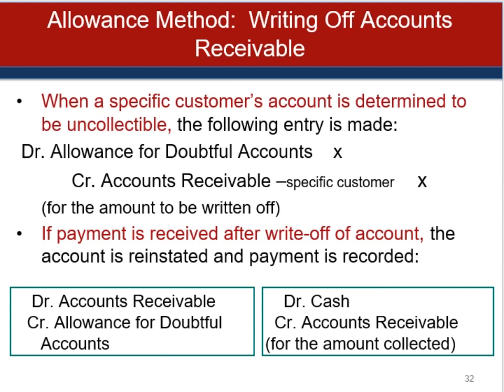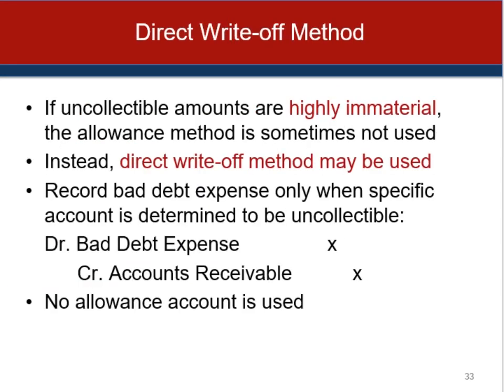If we actually received payment after having written off the account, we would undo the write-off entry and then record the collection as a separate journal entry. For some cash-based businesses with few credit transactions, a simpler method is the direct write-off method — you don't bother setting up an allowance. Under the direct write-off method, the receivable account is reduced and an expense is recorded when a specific account is determined to be uncollectible. The direct write-off method is theoretically deficient because it usually does not result in receivables being stated at their estimated realizable value. It is regarded as inappropriate if the amount deemed uncollectible is material; a subsequent recovery is recorded in a revenue account called uncollectible accounts recovered.